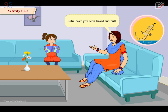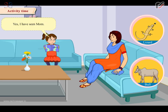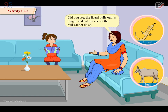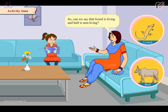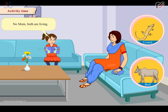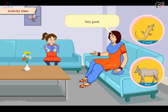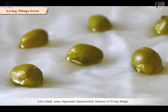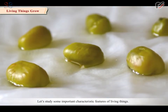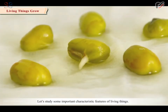Kittu, have you seen a lizard and a bull? Yes, I have seen them, Mom. Did you see the lizard pulls out its tongue and eats insects but the bull cannot do so. So, can we say that the lizard is living and the bull is non-living? No Mom, both are living. Very good. Let's study some important characteristic features of living things.